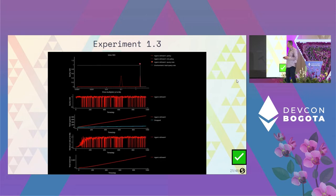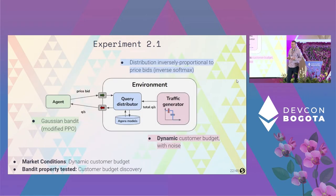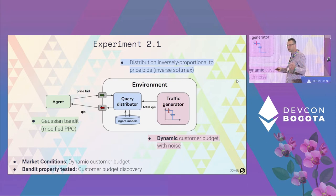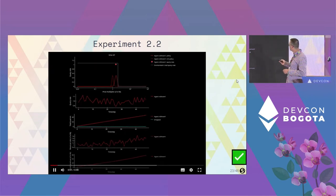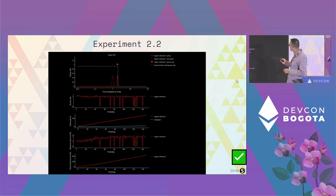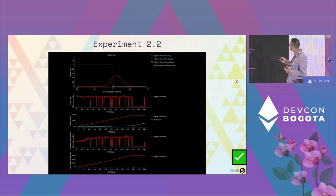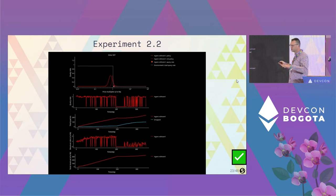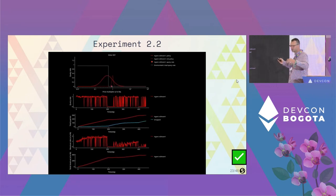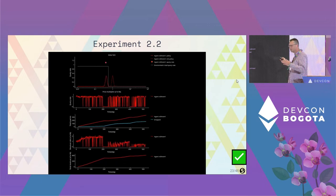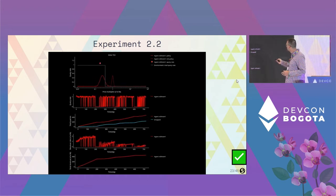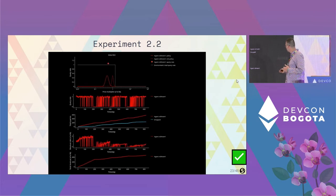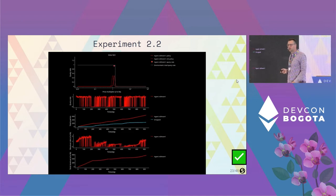Second property test: dynamic environment — the customer budget can vary over time. We test whether the agent can still discover the budget in more difficult market conditions. The agent converges, captures the right price, then the budget changes. The agent stops receiving queries, spreads its Gaussian, and once queries appear again moves to the left — recognizing it was above budget. This happens repeatedly over time, with some queries dropped but still generating revenue while reacting to the dynamic market.